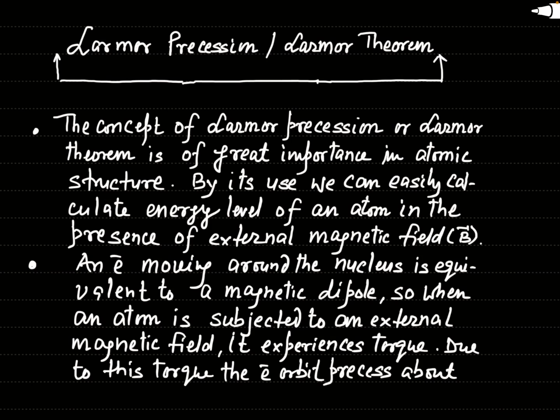This concept was developed by a well-known physicist, Larmor, and so this concept is also known as Larmor Theorem, or Larmor Precession. This is of big importance in atomic physics and atomic structure, because you know that in our atom there are discrete energy levels. If our atom is placed in an external magnetic field, then how can we find its energy levels? That is the idea of Larmor Precession and Larmor Theorem, which we will discuss in this lecture.